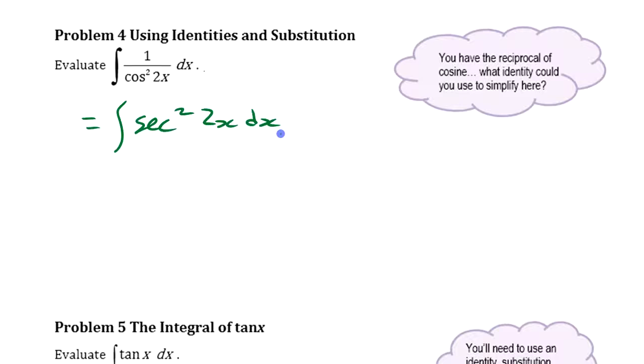Because then we don't have that reciprocal to deal with, and secant squared is one that you recognize. Integral of secant squared of something is going to be tan plus a constant, right? Because derivative of tan is secant squared.